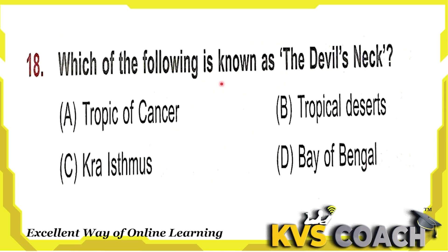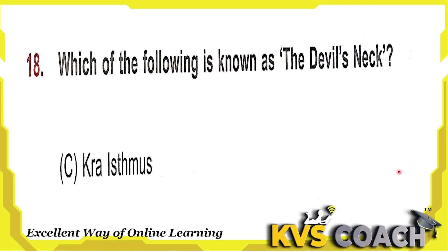Next question: which of the following is known as the Devil's Neck? Option A is Tropic of Cancer — known as the Northern Tropic. Option B is Tropical Desert — also known as the Mexican Desert. Option C is the Strait of Hormuz — yes, this is the right answer, the Devil's Neck. Option D is the Bay of Bengal — also known as Chola Lake. So the right answer is option C.